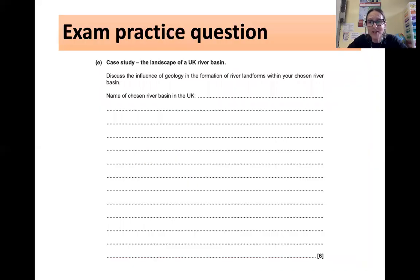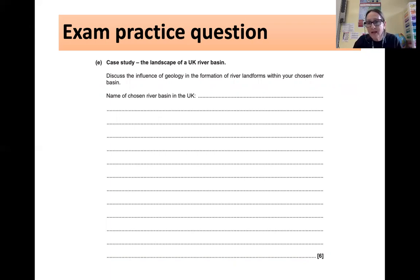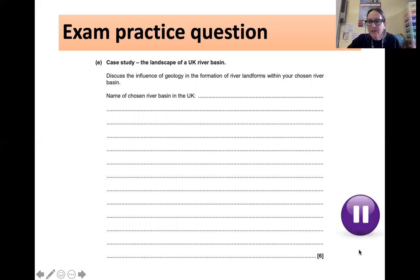Here's an exam question. It's quite a challenge to put your initial thoughts together. Discuss — with the case study being the landscape of a UK River Basin, so the River Tees in the north-eastern part of England — the influence of geology and the formation of river landforms within your chosen river basin. You're going to look at geology and how it impacts river landforms, and hopefully High Force comes to mind, with the variation in geology between hard and soft rock. To get six marks, you have to be specific and know the details about your chosen landform. Pause the video and have a go at that question.